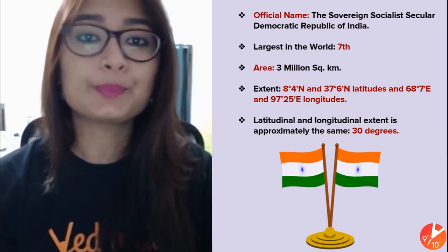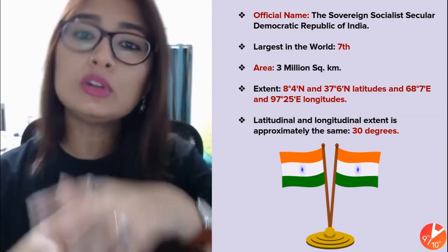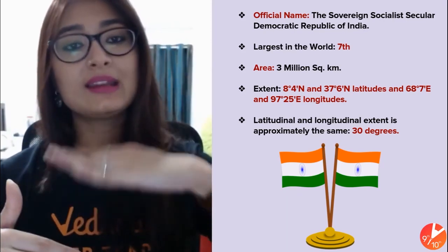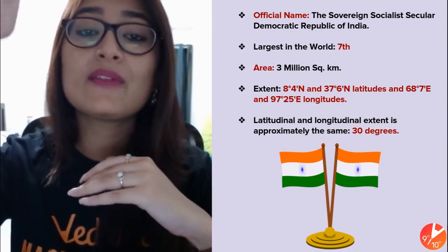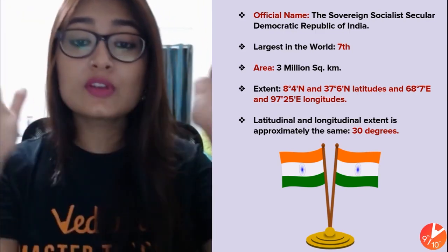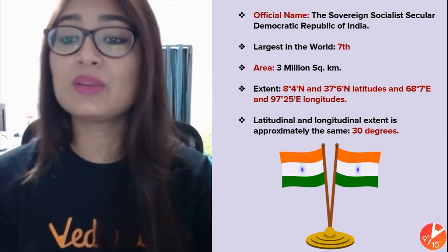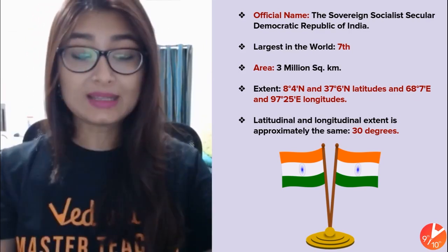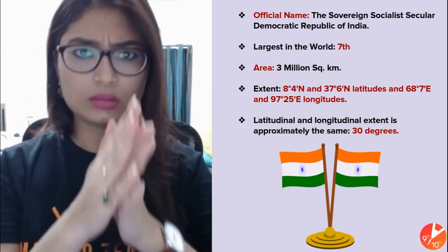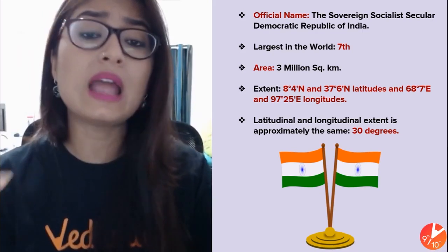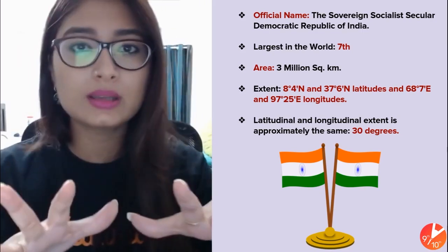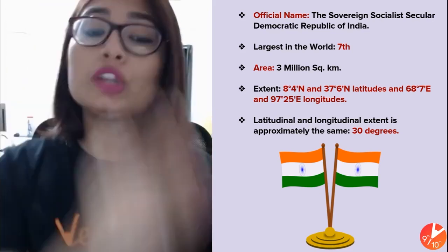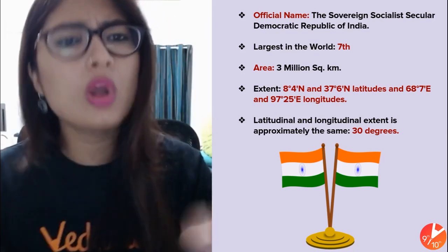What is the extent? That means where it starts and where it ends. In terms of latitude, it starts at 8 degrees 4 minutes north and goes up to 37 degrees 6 minutes north. In terms of longitude, it starts at 68 degrees 7 minutes east and goes up to 97 degrees 27 minutes east. The longitudinal and latitudinal extent are both approximately 30 degrees and almost equal.